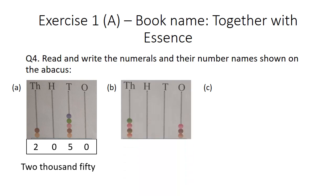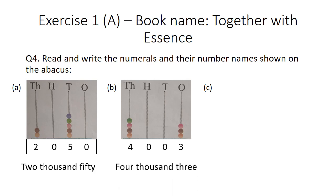Part B: at the ones place there are 3 beads. At the tens place, there are no beads. At the hundreds place, there are 4 beads. So the number formed is 4003, and its number name is four thousand and three.